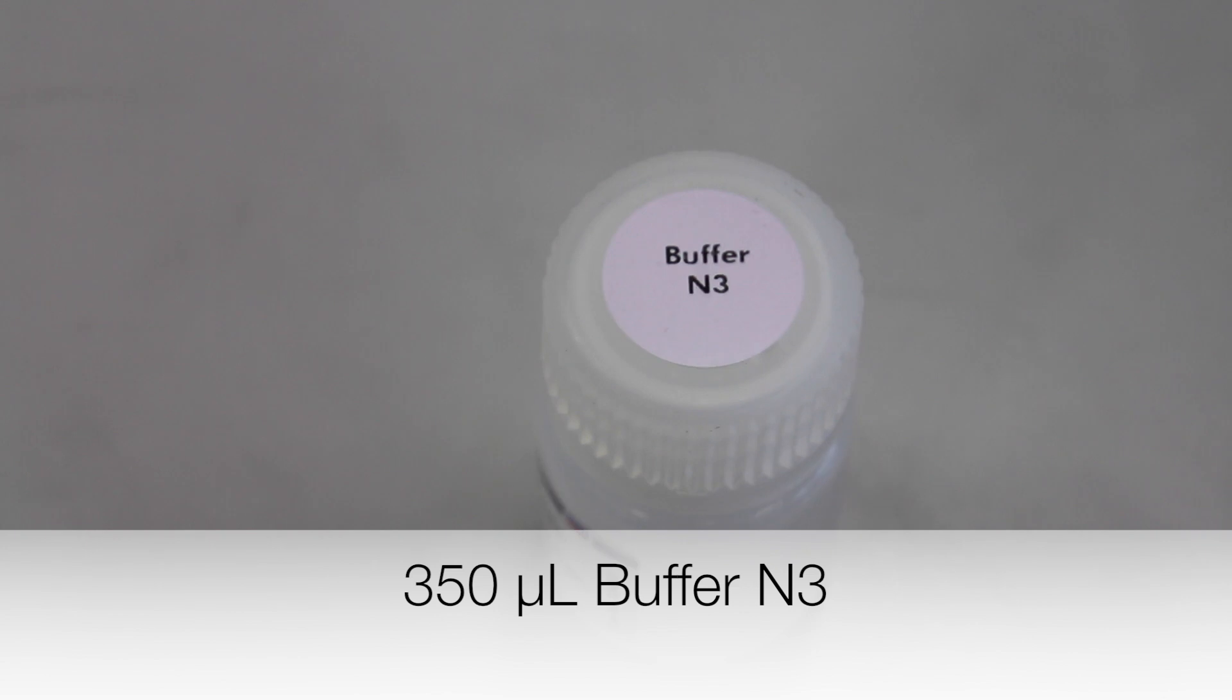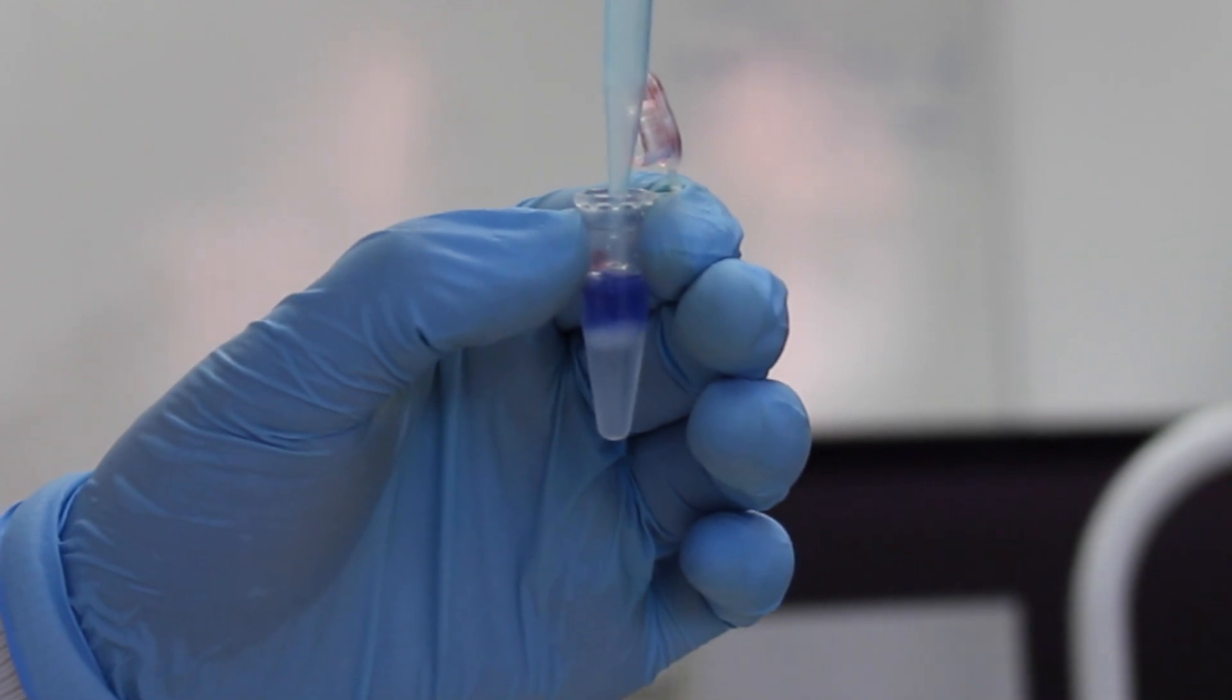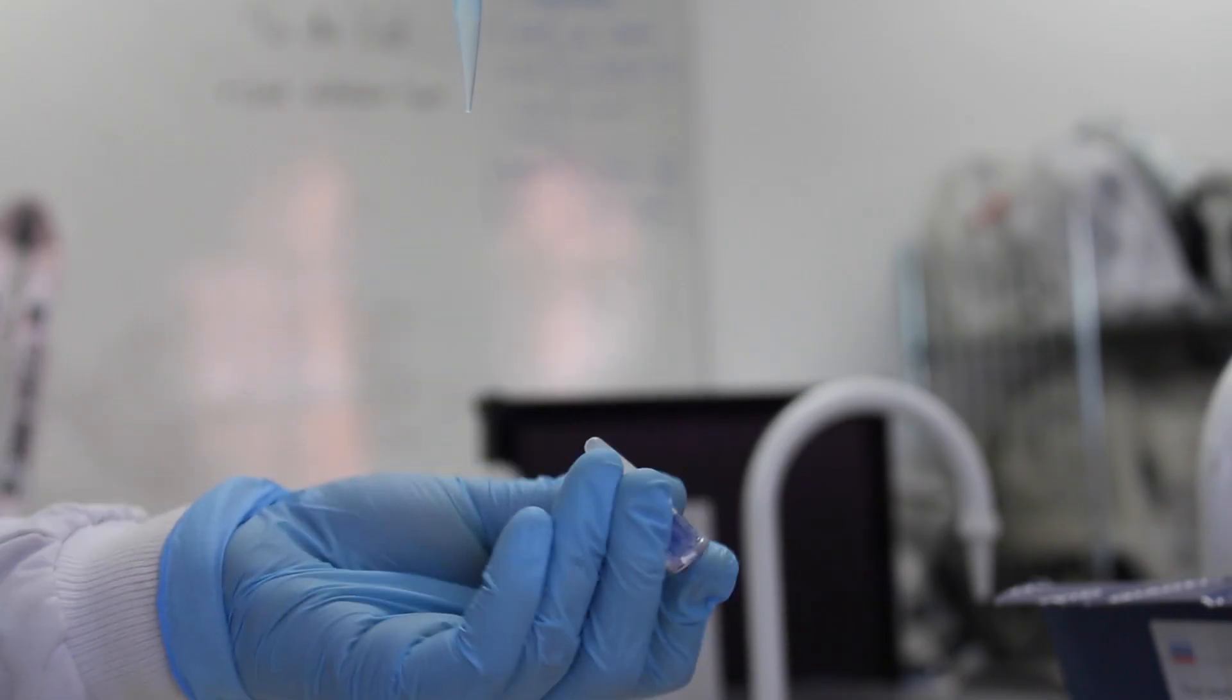The reaction is then neutralized with 350 microliters of buffer N3. This buffer contains guanidinium chloride which prevents protein folding. The tubes are inverted gently.